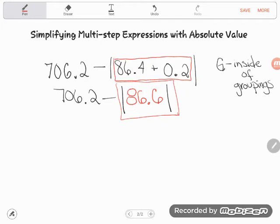Before I can deal with the subtraction, I have got to get rid of those absolute value bars. So that's what I'm going to do next. I'm going to take the absolute value of 86.6. Now remember, absolute value is defined as a number's distance from zero on a number line, which sounds like a weird definition.